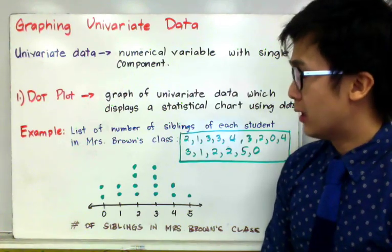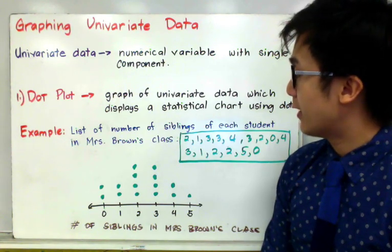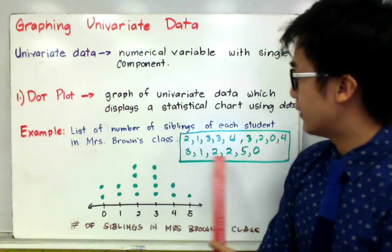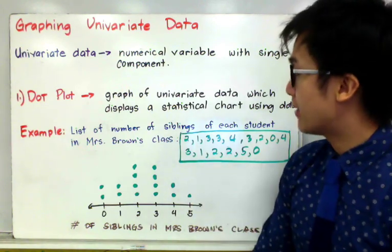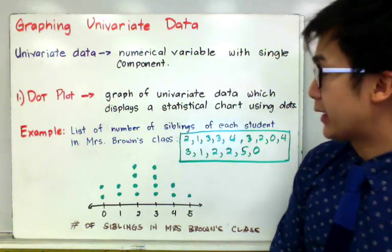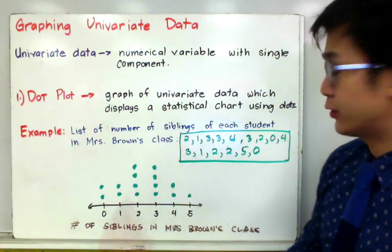So Mrs. Brown basically lists down all the number of siblings that her student has in this particular class. So this is the list of the number of siblings in that particular class mentioned or given by each of her students. So we have two siblings, one sibling, three and so on.